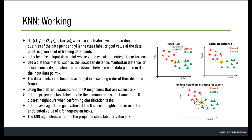For a classification task, the predicted class label of X is the majority class label among the K nearest neighbors. If more than half of the neighbors belong to class C1 and the remaining belong to class C2, then X is predicted as class C1. If there is a tie, a majority vote scheme is used to break it. For regression, the predicted value of X is the average of the target values of the K nearest neighbors.